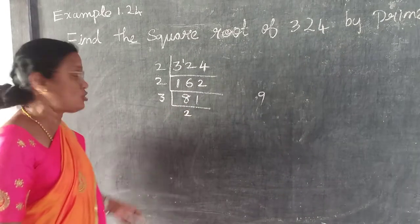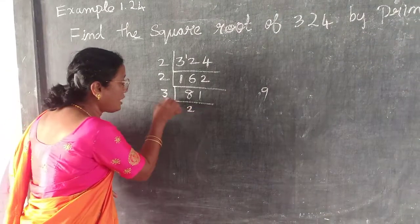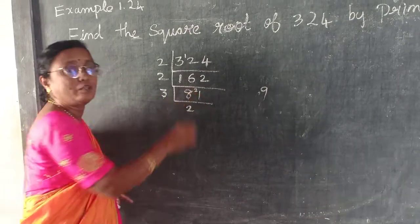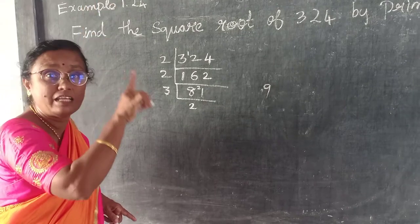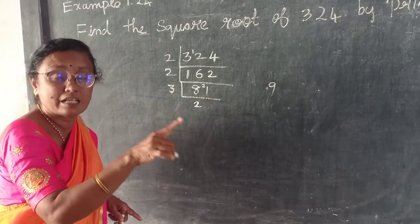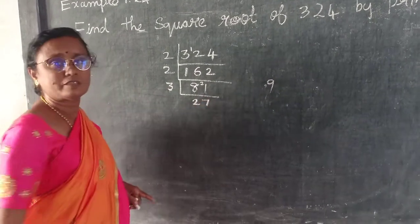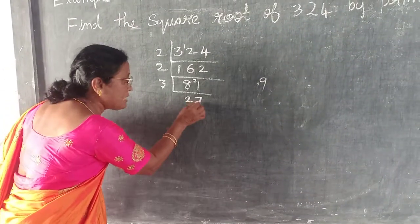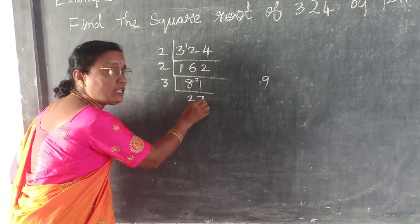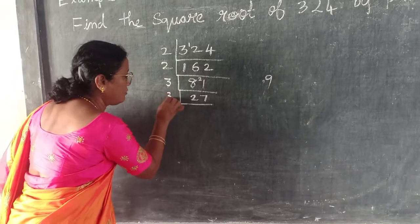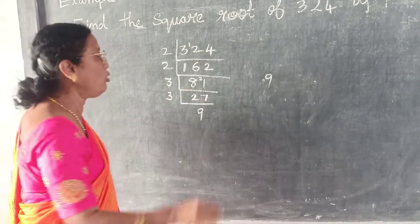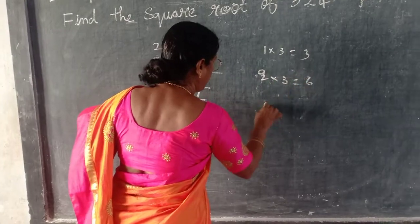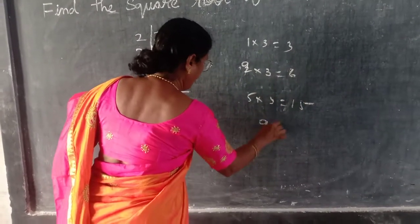So 81: 2 3's are 6, from 8 — 6 is subtracted, remainder is 2. 21 — 7 3's are 21. So 27. Since it is 27 you know it comes under the 3 table. Otherwise: 2 plus 7 is 9, and 9 is divisible by 3, therefore 27 is also divisible by 3. So 3 — 9 3's are 27. When you say the table: 1 3 is 3, 2 3's are 6, 5 3's are 15, 9 3's are 27.